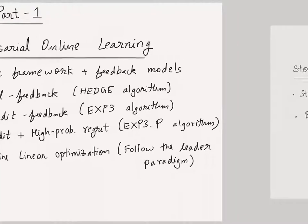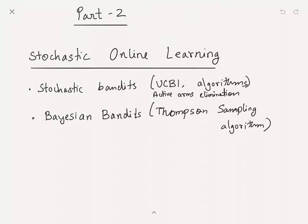In the second part I will talk about the stochastic version of online learning and stochastic bandit algorithms. In particular, I will cover two famous algorithms: the UCB1 algorithm and the active arms elimination algorithm, both fundamental and important in their own right. Finally, I will briefly touch upon Bayesian bandits, in particular the well-known Thompson sampling algorithm, and discuss theoretical analysis in certain special cases.